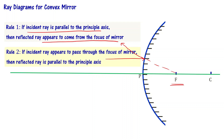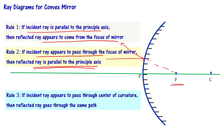Rule number two says that if the incident ray appears to pass through the focus of the mirror, then the reflected ray is going to be parallel to the principal axis. Rule number three says that if the incident ray appears to pass through the center of curvature, then the reflected ray goes through the same path but in opposite direction. These three rules are similar to the rules given for the concave mirror.